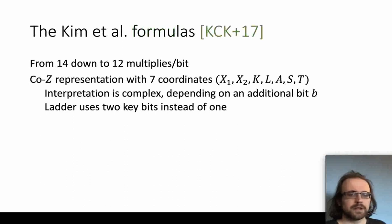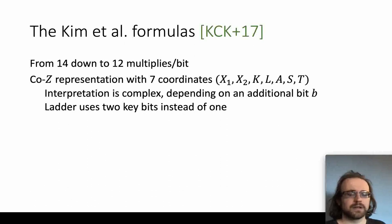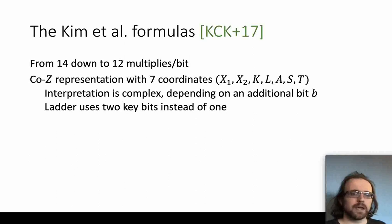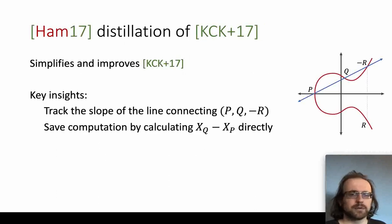Our work today is based on the Kim et al. formulas from 2017, which improved the state of the art from 14 down to 12 multiplications per bit. The representation they use is a cozy representation with seven different coordinates of somewhat complex interpretation. This interpretation depends on an additional bit b which depends on the key bits, and in fact the ladder uses two key bits instead of only one.